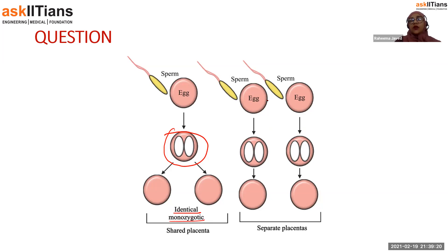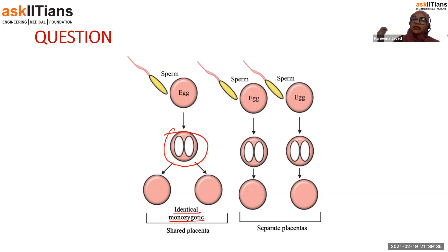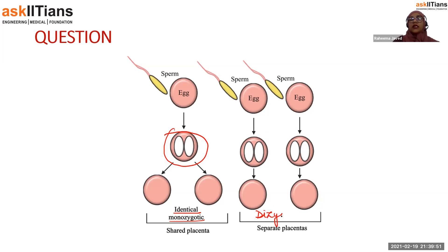Sometimes both ovaries produce eggs in the same month — usually only one ovary produces an egg per month. When both eggs get fertilized and are simultaneously implanted in the uterus, this produces dizygotic twins, which are non-identical twins.